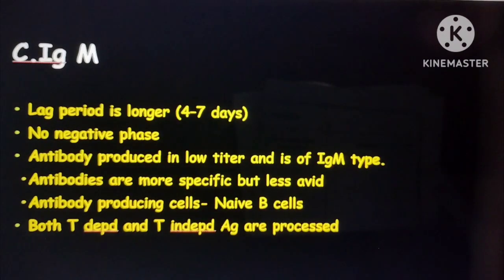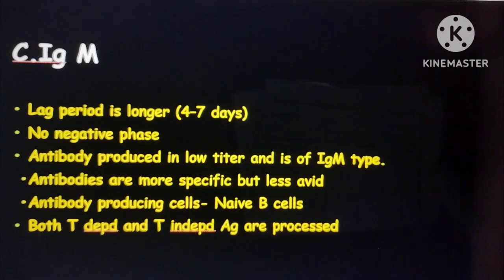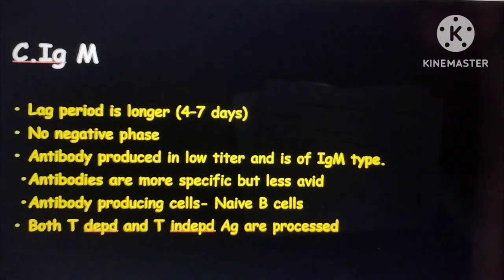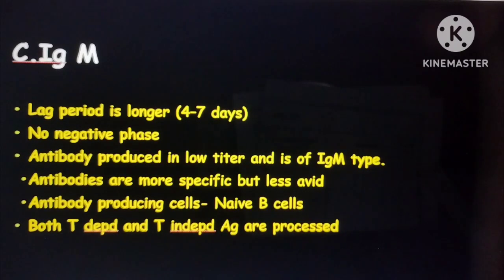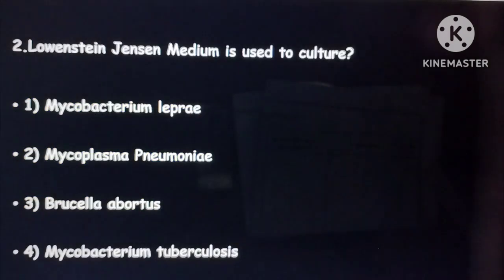Important points to remember about IgM: the lag period is usually longer, there will be no negative phase, and this antibody will be produced in low values. These are more specific but less avid, and they are usually produced by naive B cells. Both T-dependent and T-independent antigens are usually processed by IgM.